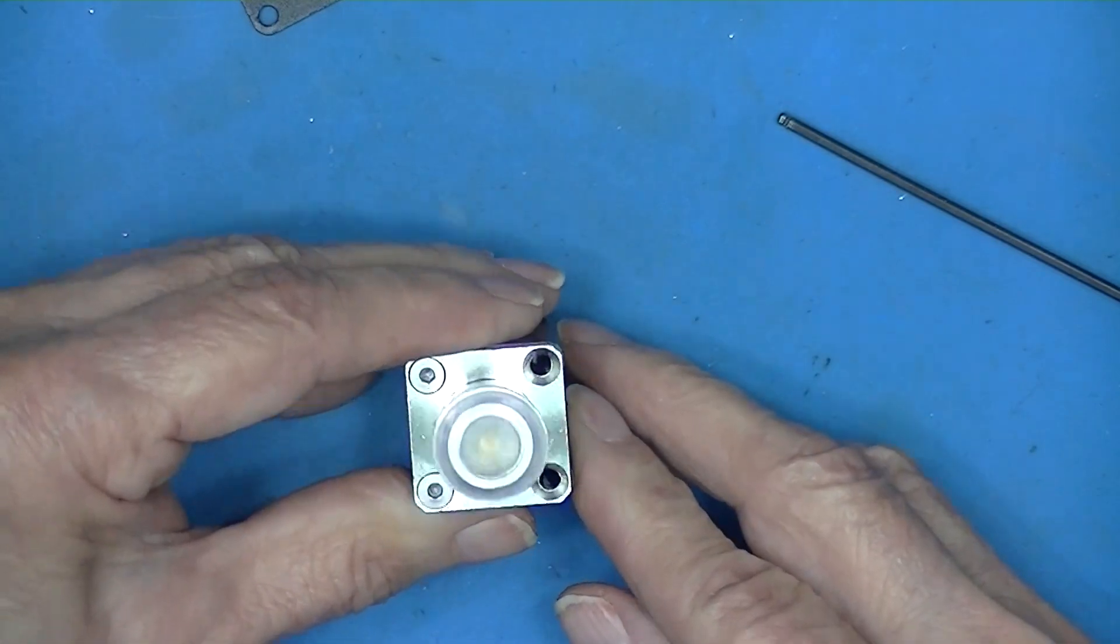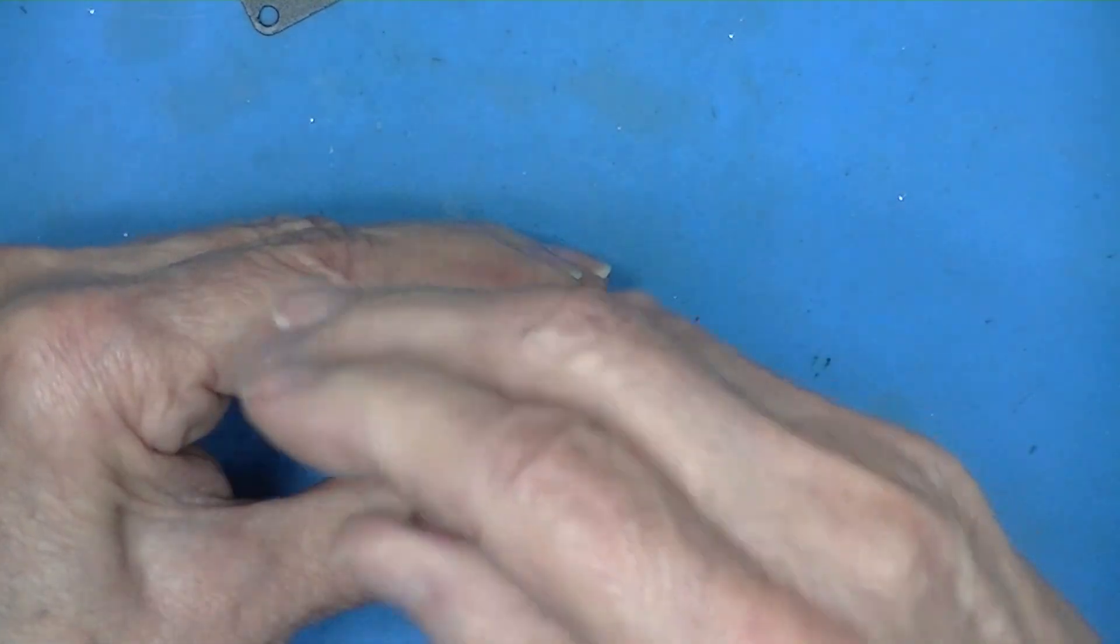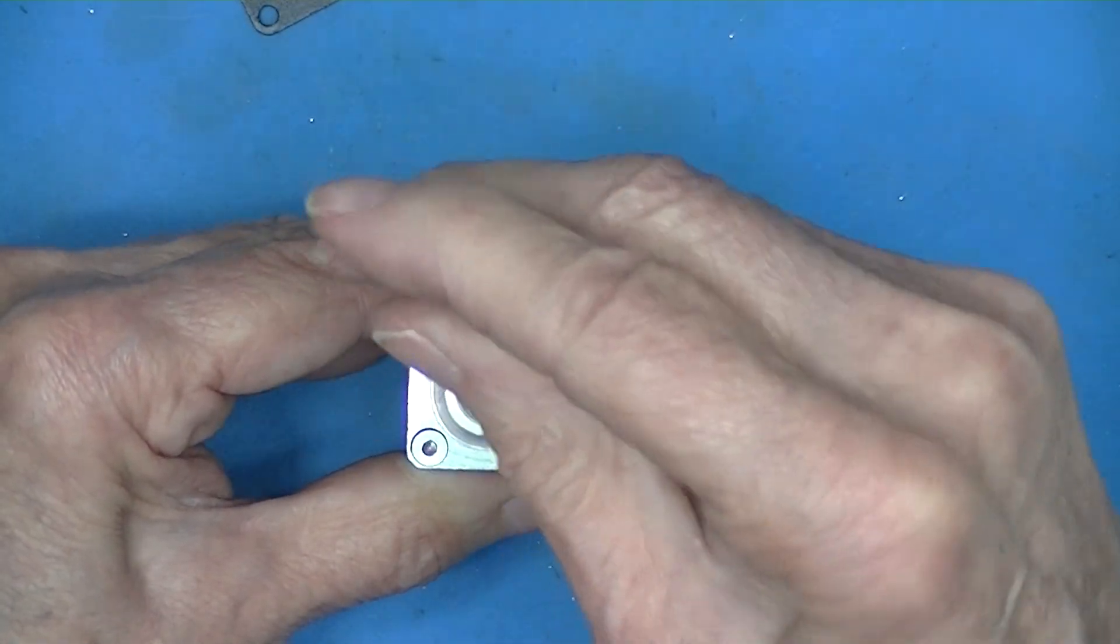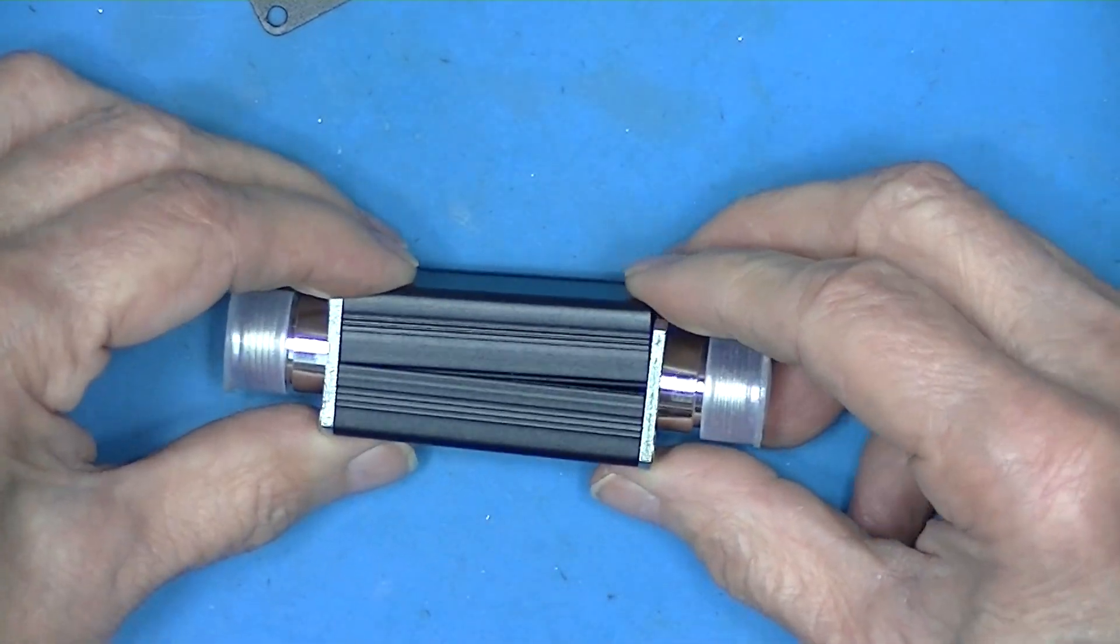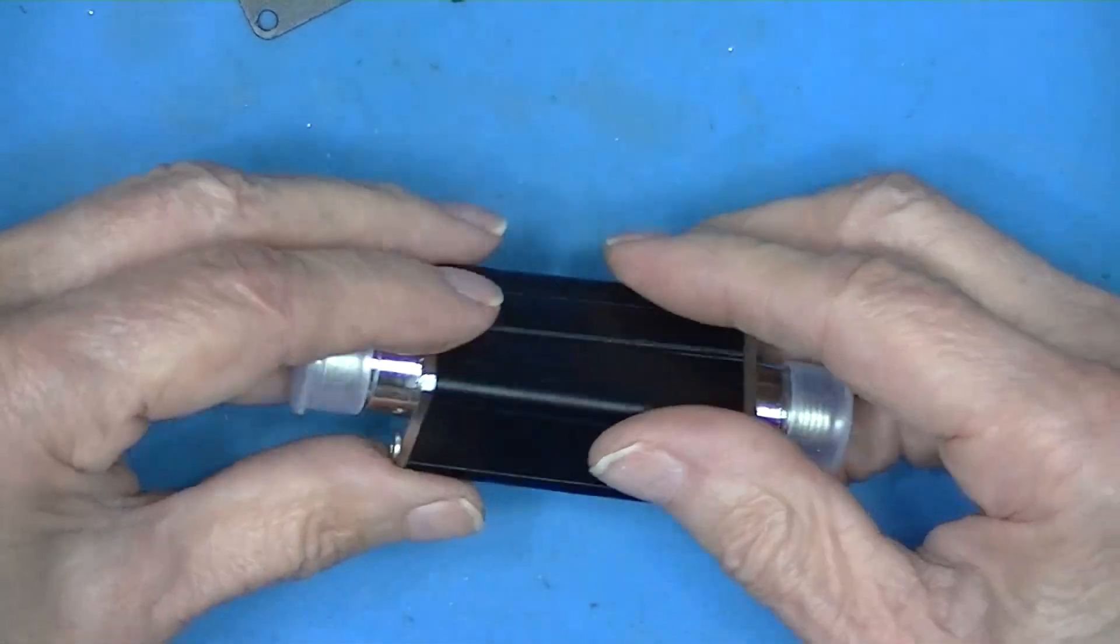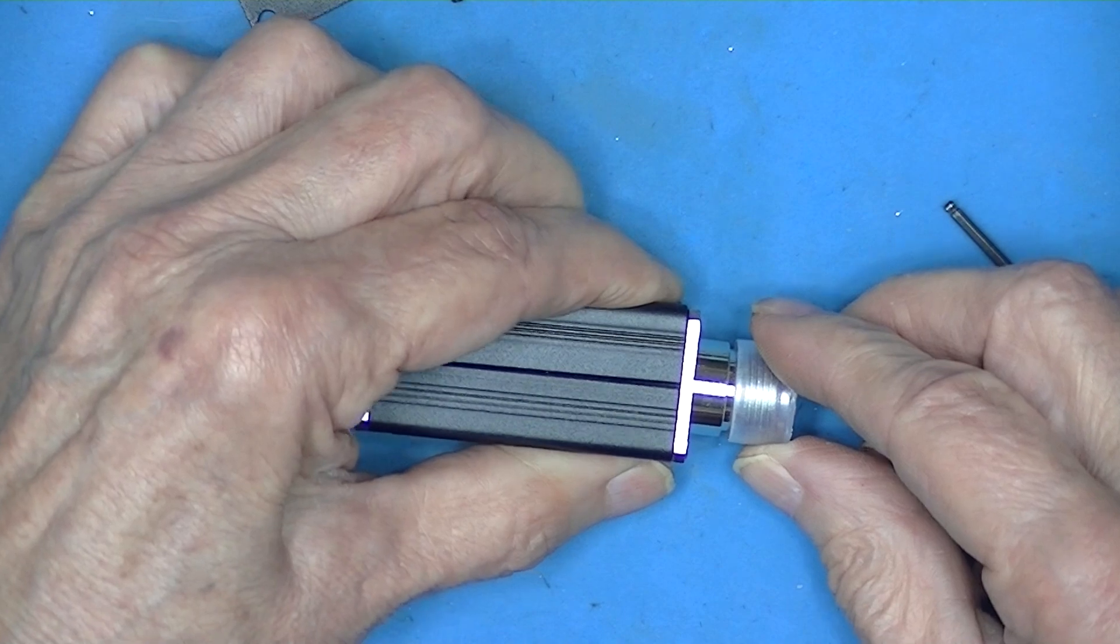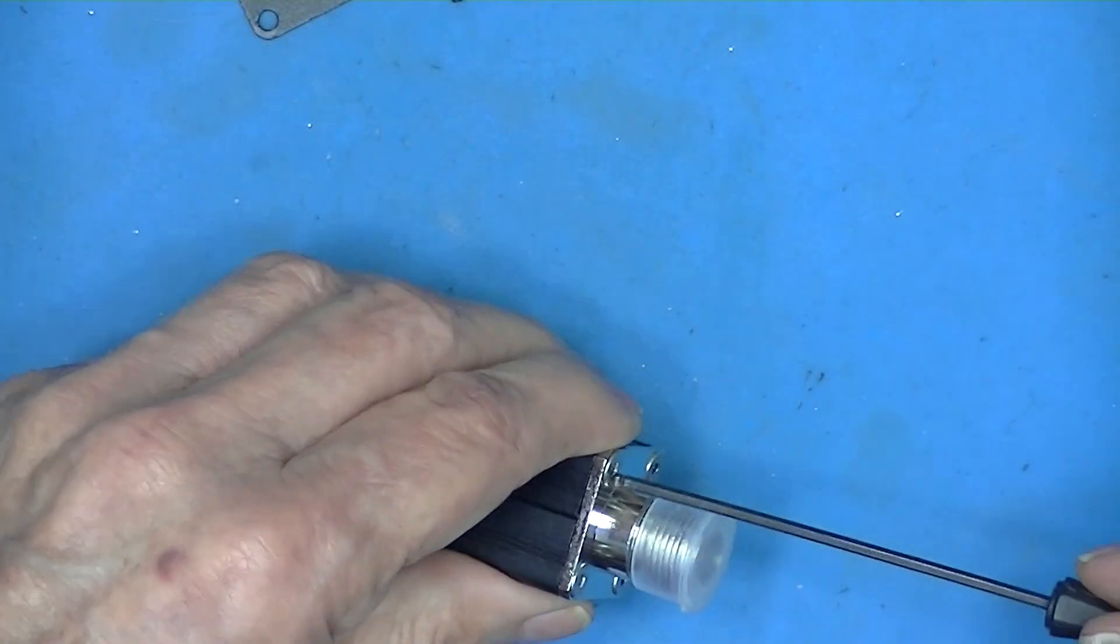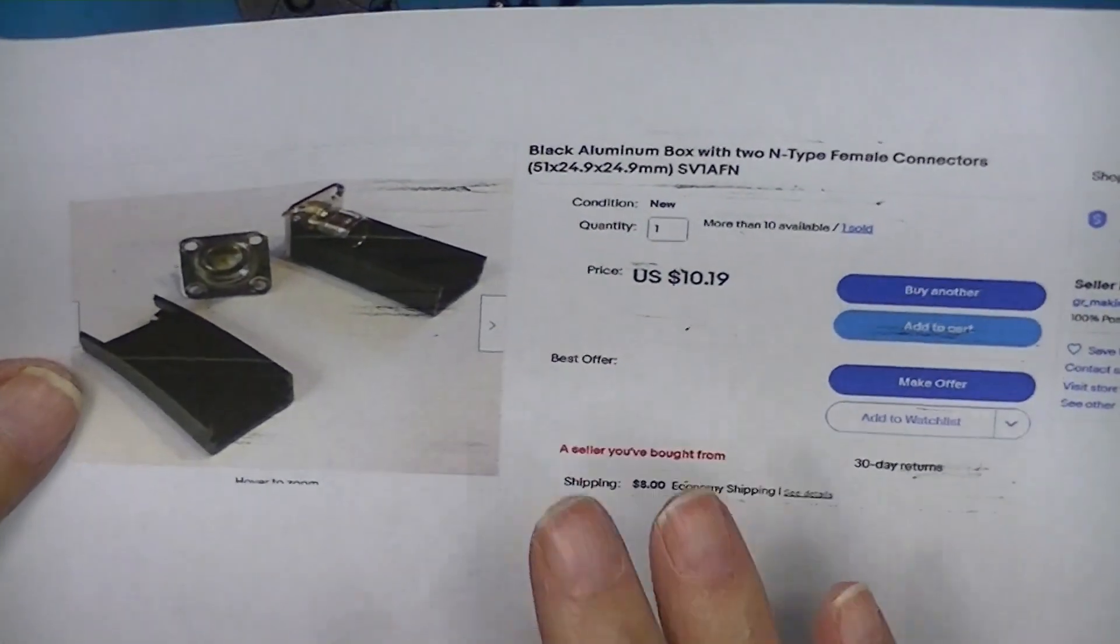I believe this is what was intended to be supplied from Greece. It's just not what ended up coming. Now you see I've started this one. This one's snug, this one's just starting. You see it's going to end up pulling the case together, which it should do. That would make it nice and tight. So here's what was supposed to come in the kit.